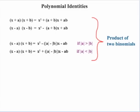One identity is a product of two binomials, and these are pretty common. x plus a times x plus b would come out to be x squared plus (a plus b) times x plus ab as our constant. Then x minus a times x minus b — the signs are both negative — we get x squared minus (a plus b) times x, plus ab for our constant.